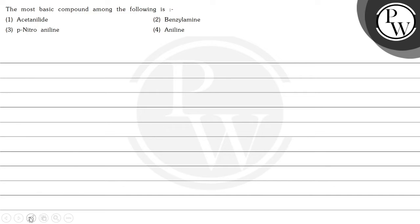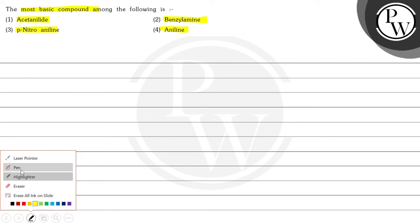Hello Bacho, let's read this question. The most basic compound among the following is: acetanilide, benzylamine, paranitroaniline, and aniline. So here we have to find out the most basic compound.